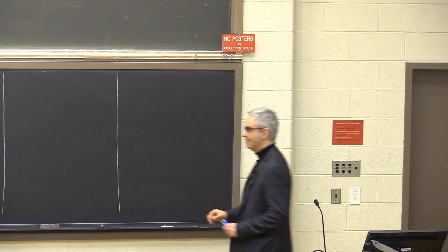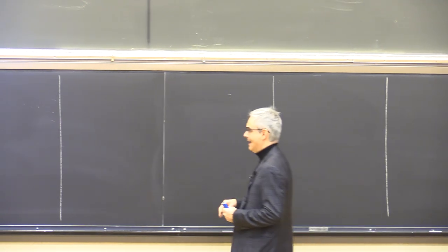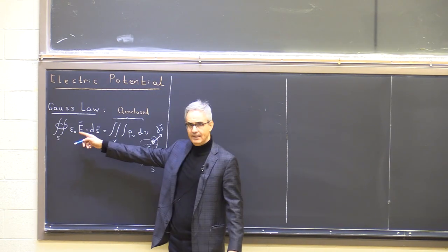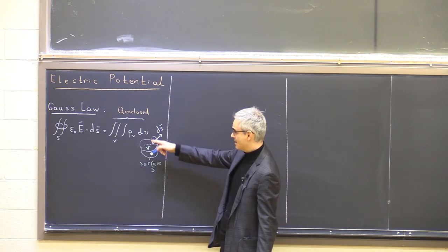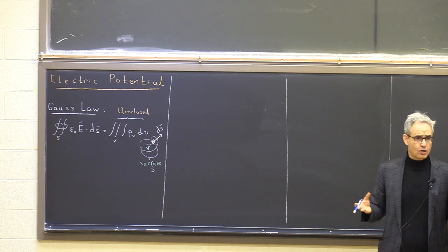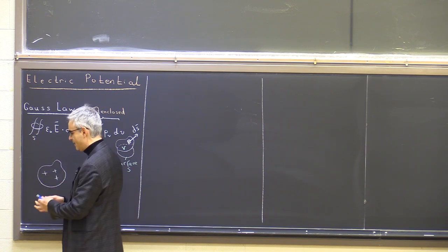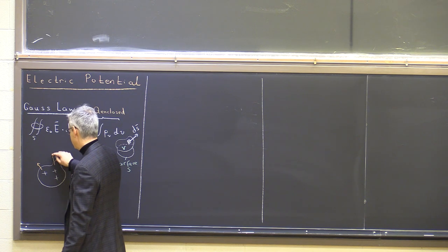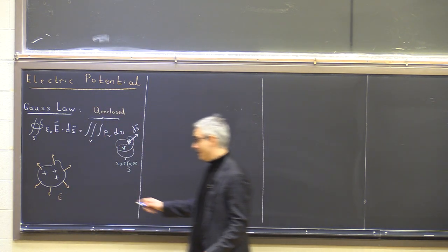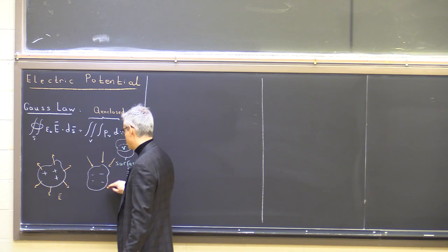So far we have seen that the electrostatic field — the field generated by static charge distributions, immovable charges — satisfies Gauss's law. Gauss's law says that if you calculate the flux of the electric field through a closed surface S, that will be equal to the enclosed charge. This is basically equivalent to Coulomb's law. The flux is positive for positive enclosed charge, meaning the electric field comes out of the volume, and negative for negative charge, meaning the field sinks into the volume. So this is the first law.